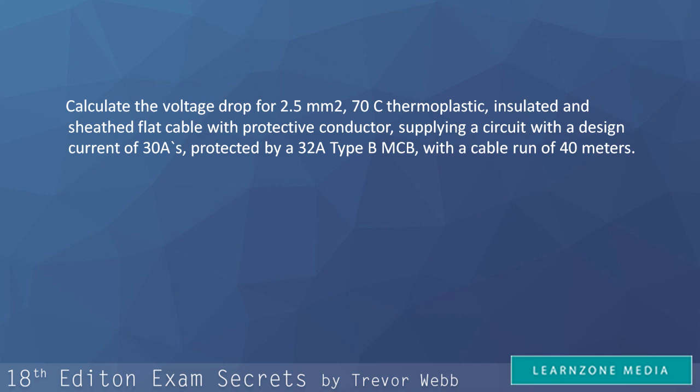As the question is about a cable with conductor cross-sectional area of 2.5 millimetres squared, we now have to look at the second row of Table 4D5. Here you will see, in the last column, that the millivolts per amp per metre value is 18.